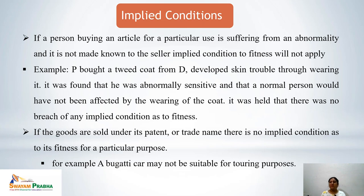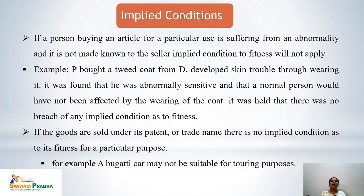If a person buying an article suffers from an abnormality, this must be made known to the seller — if not disclosed, the implied condition as to fitness would not apply. For example, B bought a tweed coat and developed skin trouble, but it was found he was abnormally sensitive and a normal person would not have been affected — there was no breach of implied condition as to quality and fitness. Furthermore, if goods are sold under a patent or trade name, there is no implied condition regarding fitness for a particular purpose, such as purchasing a Bugatti car and finding it unsuitable for touring purposes.